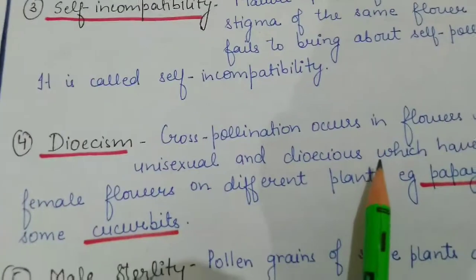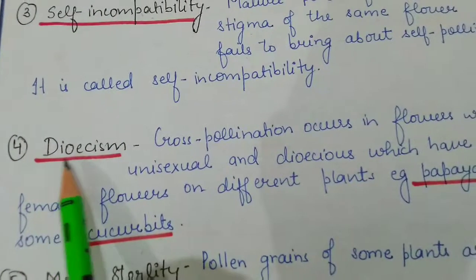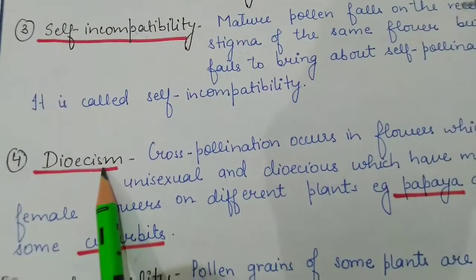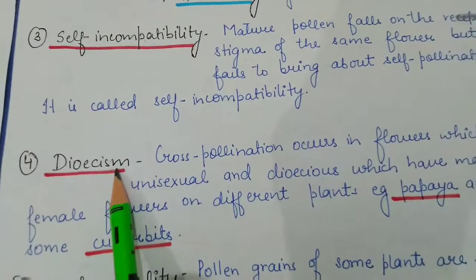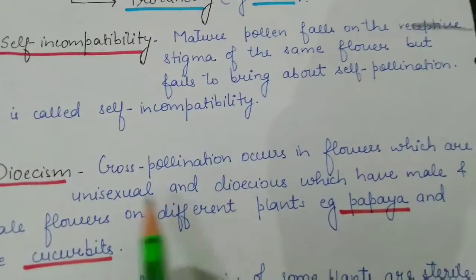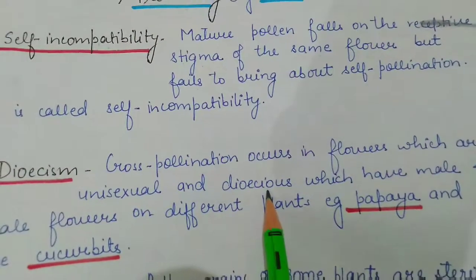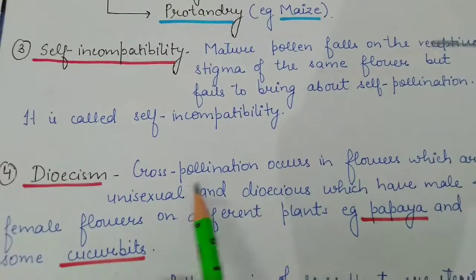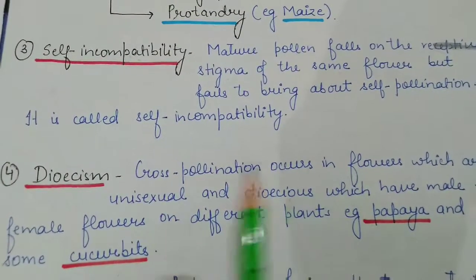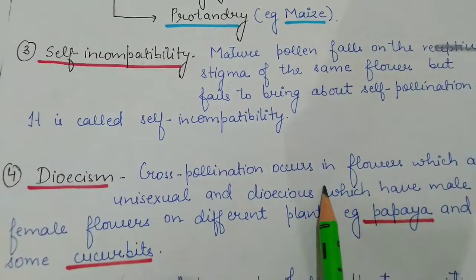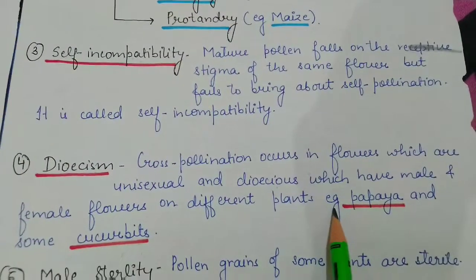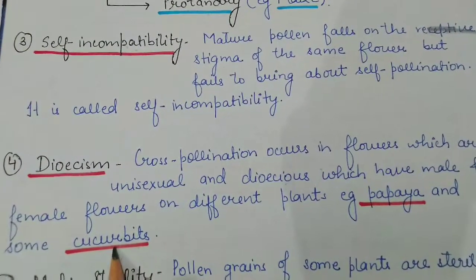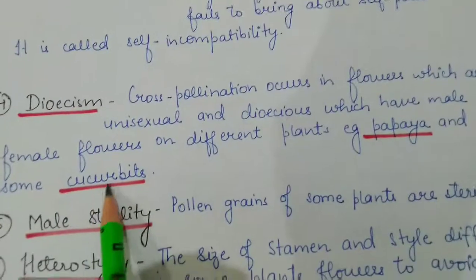The fourth property is dioecy. Cross pollination can occur in plants which are unisexual and dioecious, meaning there are two separate plants: one with male flowers and one with female flowers, of the same species. Examples are papaya and some cucurbits.